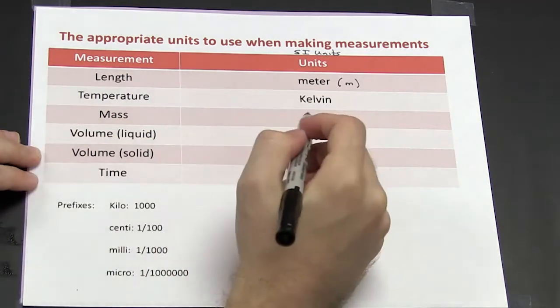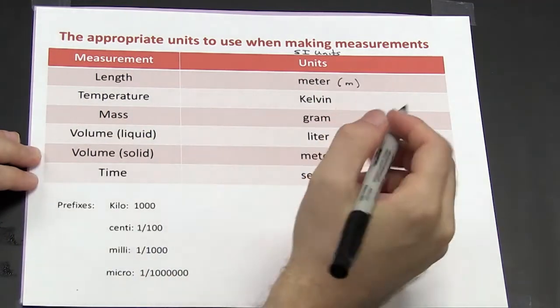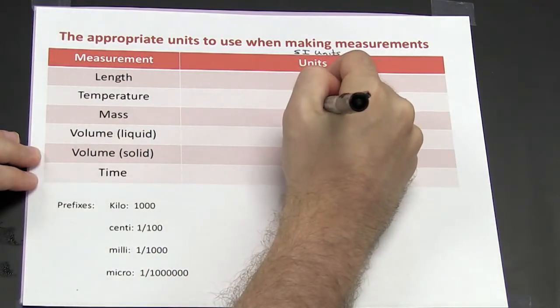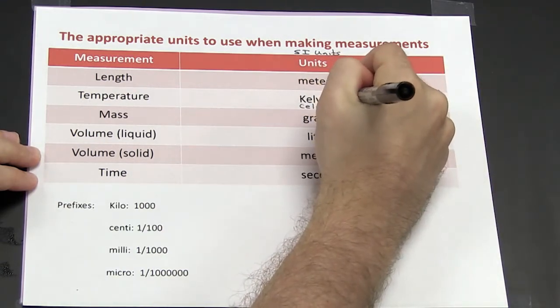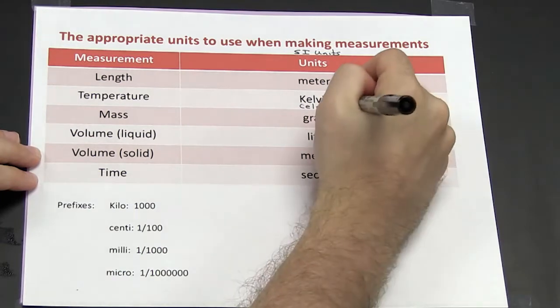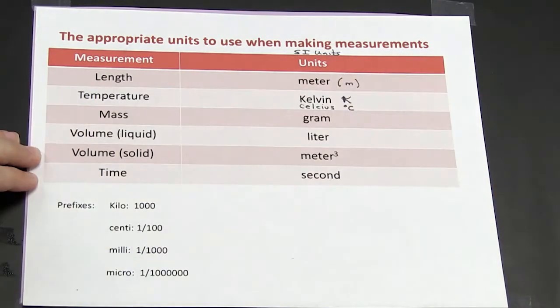Temperature can be measured either in Kelvin or in Celsius. Fahrenheit is not used. Kelvin is written with the letter K and Celsius is written in degrees C.